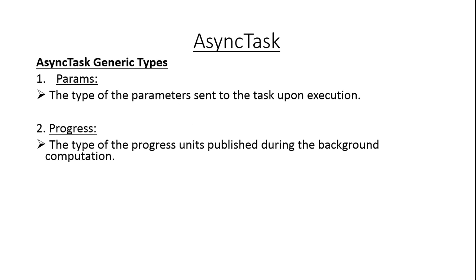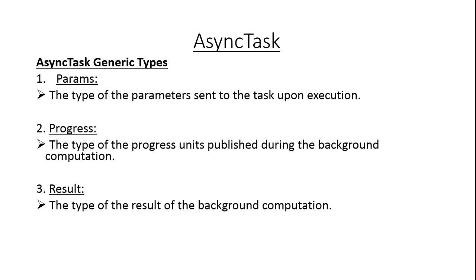The second generic type is Progress — the type of the progress unit published during the background computation. For example, if you want to publish the progress as an integer, you specify Progress as int; if you want to publish it as a double, you specify the type of Progress as double. The last generic type is Result — the type of the result of the background computation. If you want to publish the result as an integer, specify it as int; if as a long, specify it as long.